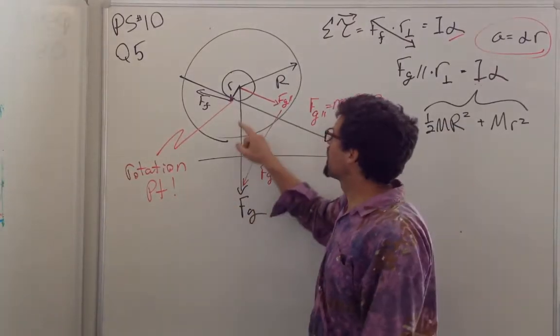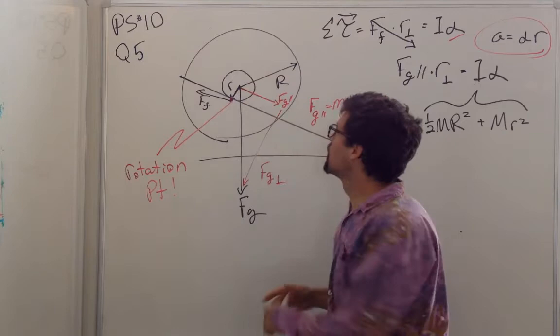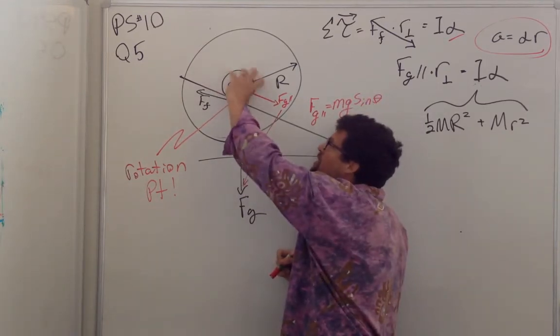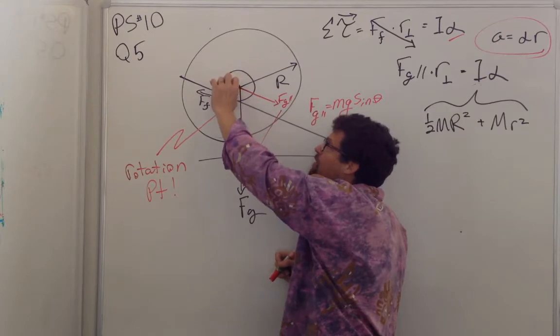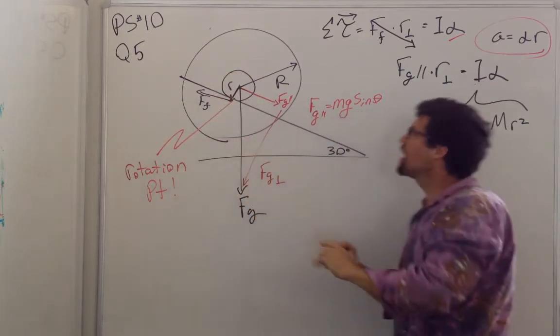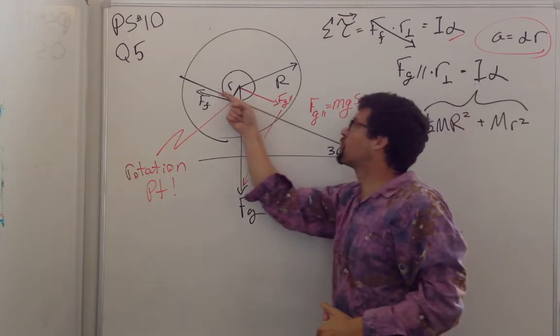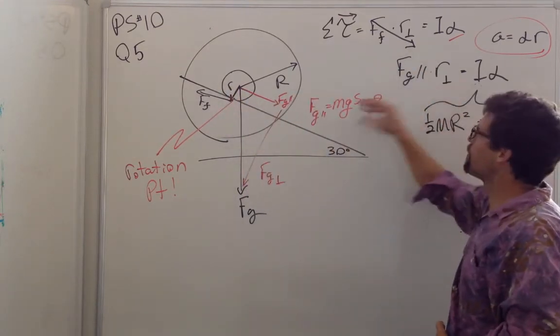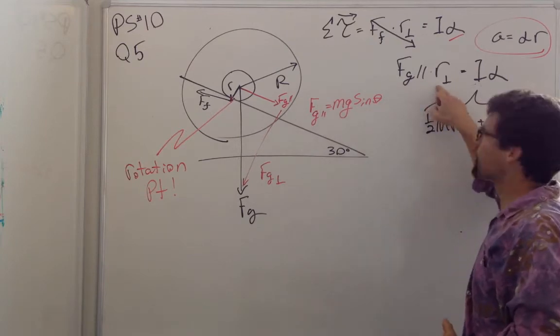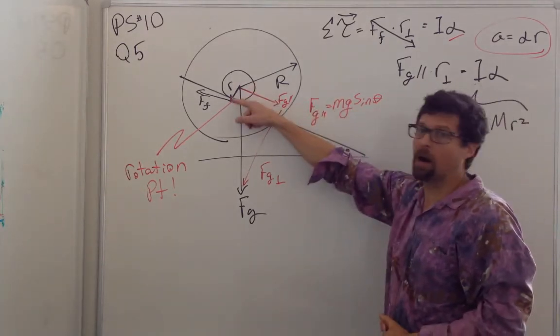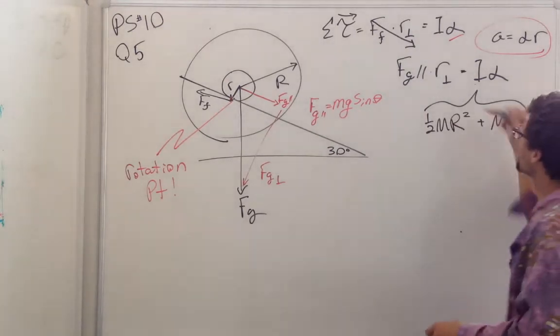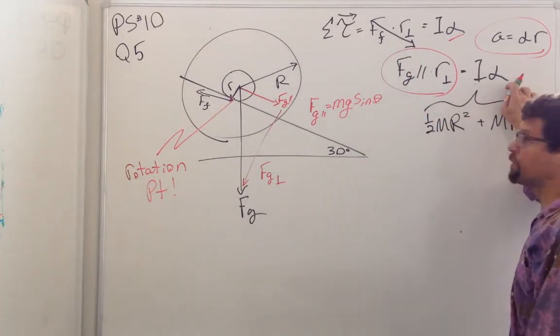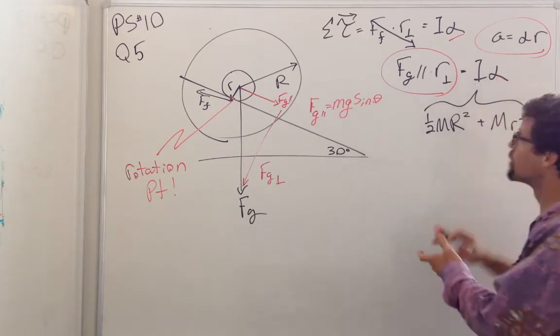If instead of looking at it as the torques about the center of mass, we say let's let this be the rotation point, and look at the whole system rotating about this point. Now why this is nice is it allows your torque, rather than to be a force you don't know times the radius, it's a force that you do know, the parallel component of gravity times the perpendicular radius or just r. So we can calculate this torque very easily, and set it equal to I times alpha. The only difference is now the moment of inertia, because we're rotating about this point and not this one.